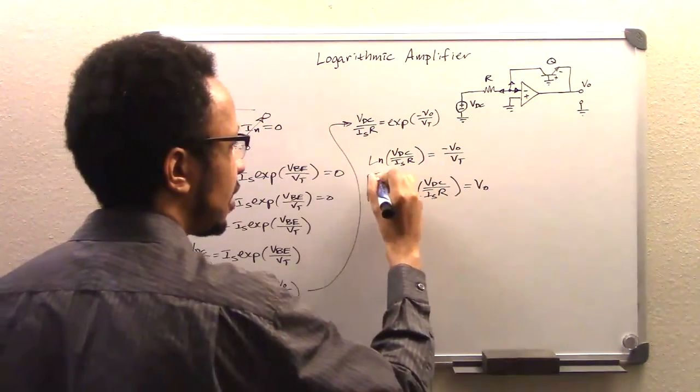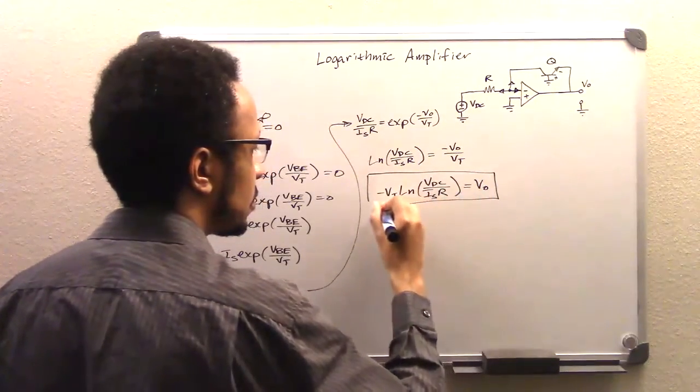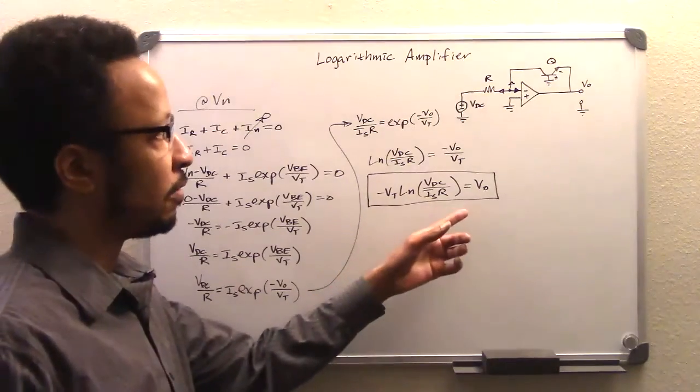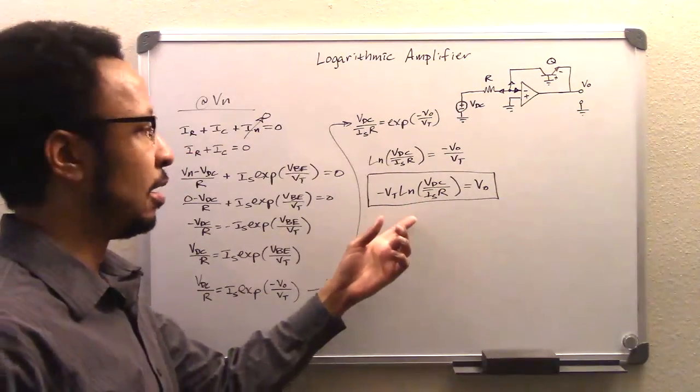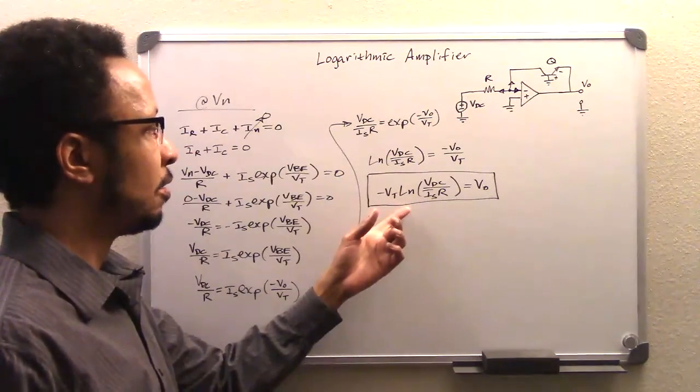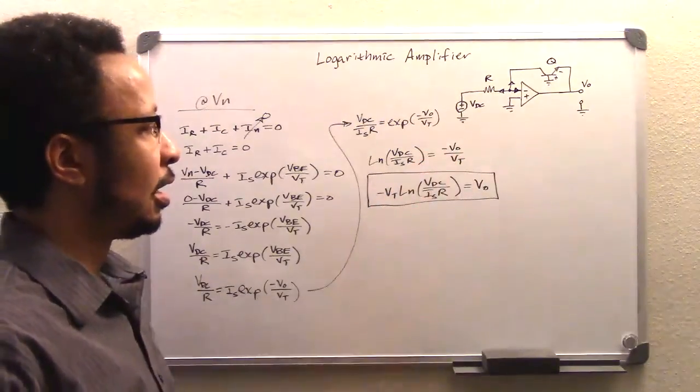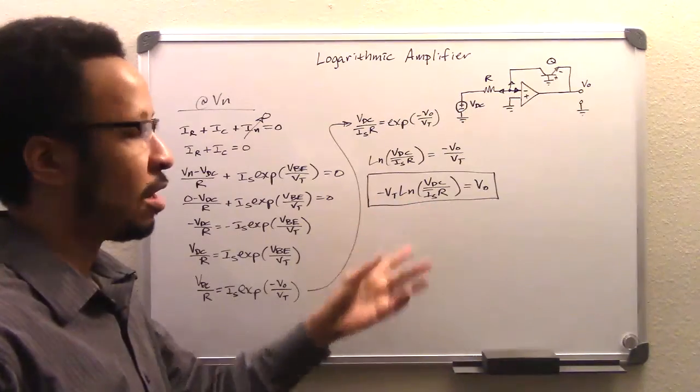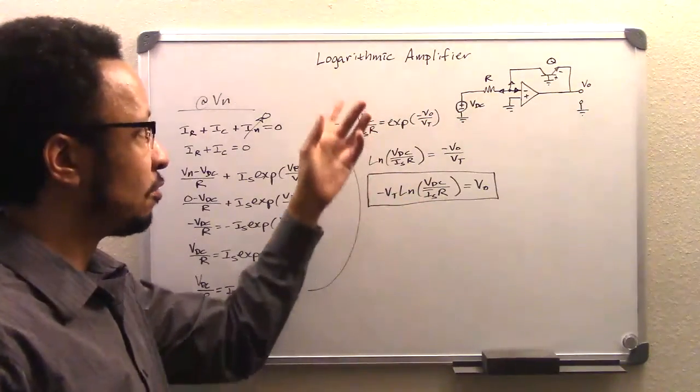And so this is our final relationship that we're looking for that in fact verifies this to be a logarithmic amplifier, natural log that is base E, a logarithmic amplifier.